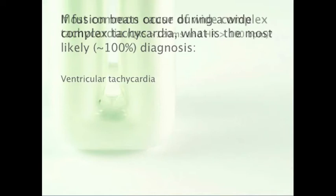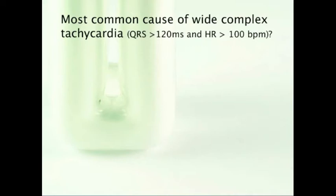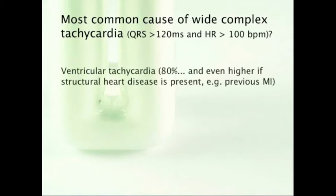What is the most common cause of wide complex tachycardia? Wide complex tachycardia is defined as a QRS duration greater than 120 milliseconds and a heart rate greater than 100. The most common cause is VTAC — 80% of the time, a wide complex tachycardia is VTAC. And if structural heart disease is present, that percentage goes up to 95%. Who is going to have structural heart disease? Older patients with previous MIs, for example.